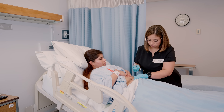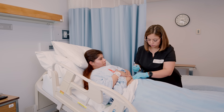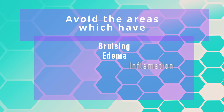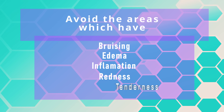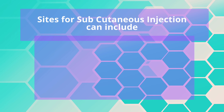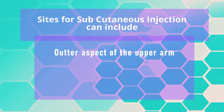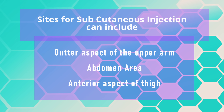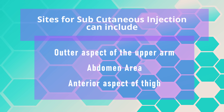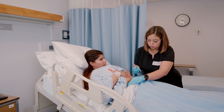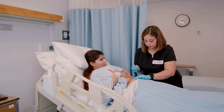Ask the patient if they have any questions regarding the medication or the injection. Then determine the possible site for the administration of the subcutaneous injection. Avoid areas which have bruising, edema, inflammation, redness, or tenderness. Sites for subcutaneous injection can include the outer aspect of the upper arm, the abdomen below the costal margin to the iliac crest, and the anterior aspect of the thigh. These areas are easily accessible and large enough to allow multiple injections.